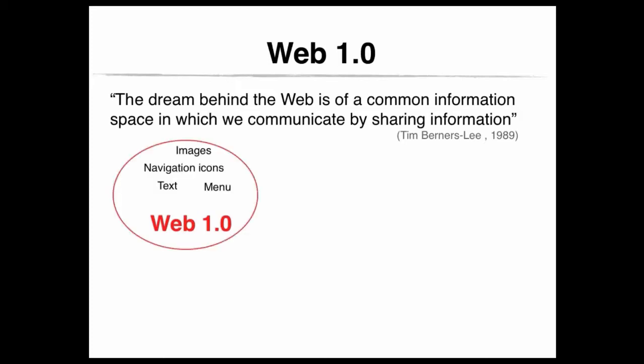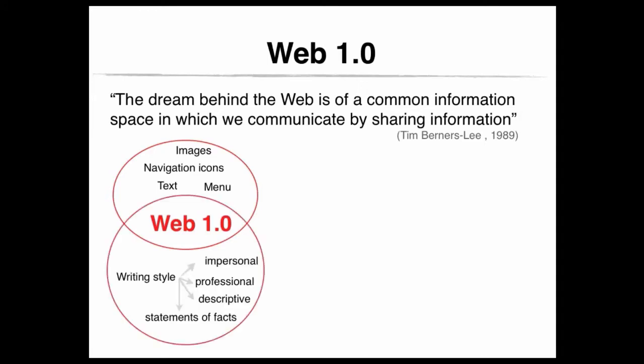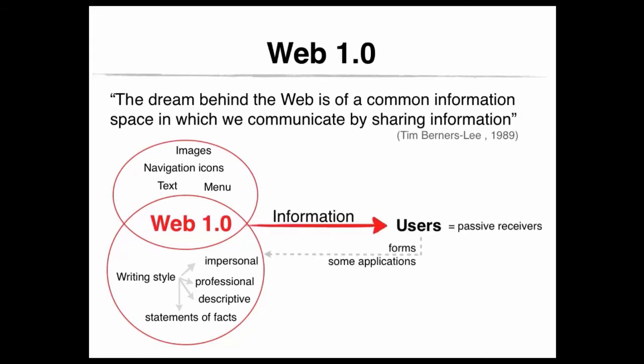A Web 1.0 page contained images, navigation icons, text, and menus. Its writing style was mainly impersonal, professional, and descriptive with statements of facts. No efforts were made to link between sites, and interactivity was limited to submitting forms and some dynamic applications. Web 1.0 applications were slow and pages needed to be refreshed when new information was entered. Users were able to view web pages and reflect on their content but didn't have the ability to leave a comment directly on a web page.